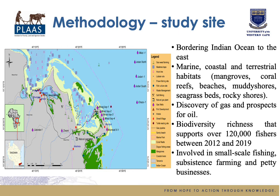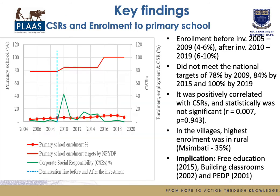Twelve focus group discussions were conducted to understand experiences of conflict in the study area. The study area is in the southernmost part of the country — Mtwara — and it borders the Indian Ocean. This area is a marine biodiversity hotspot, with a discovery of gas and prospects for oil. The biodiversity richness supports fishing communities involved in small-scale fishing and subsistence farming.